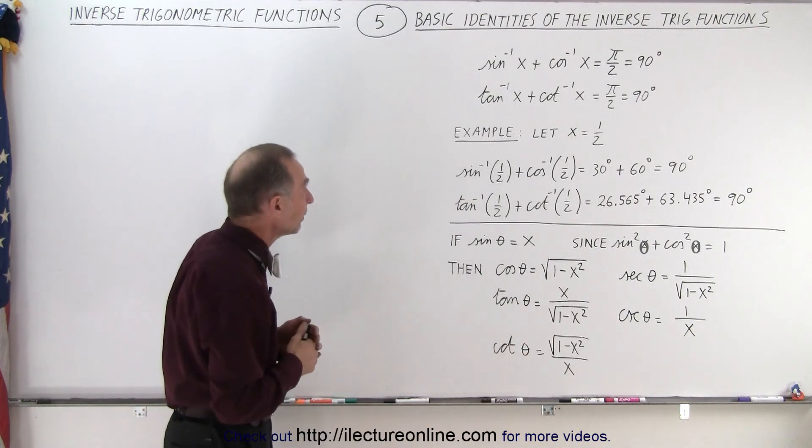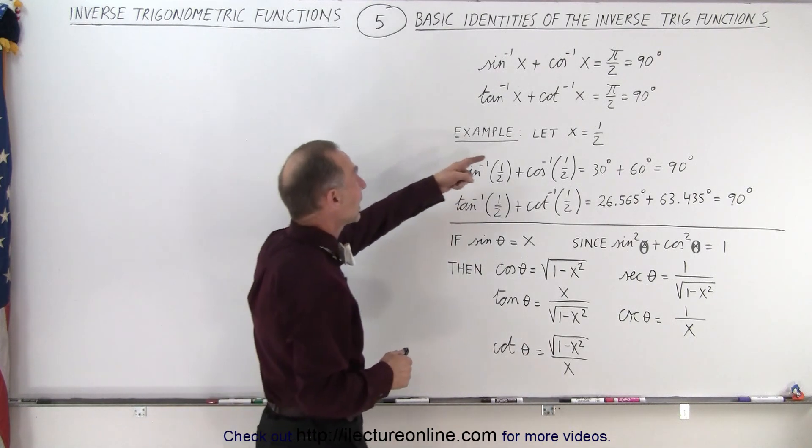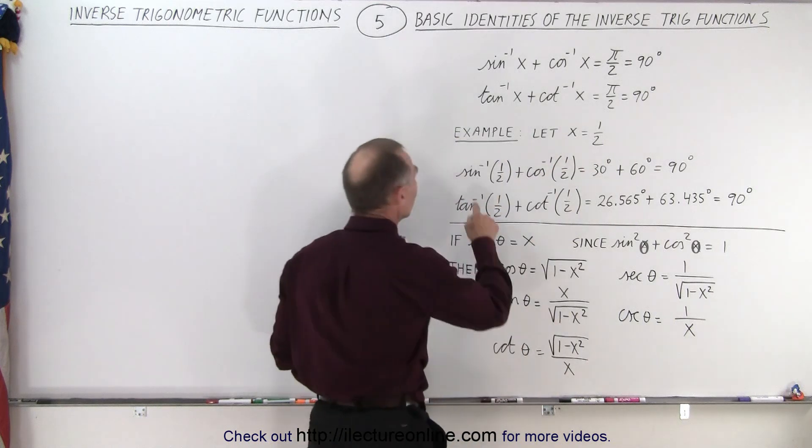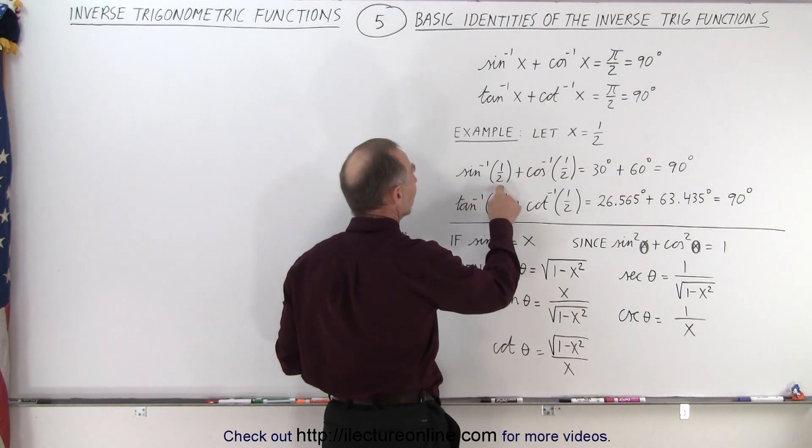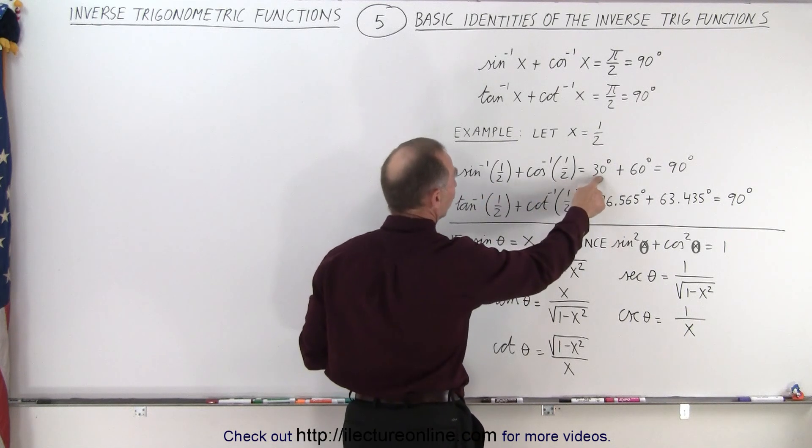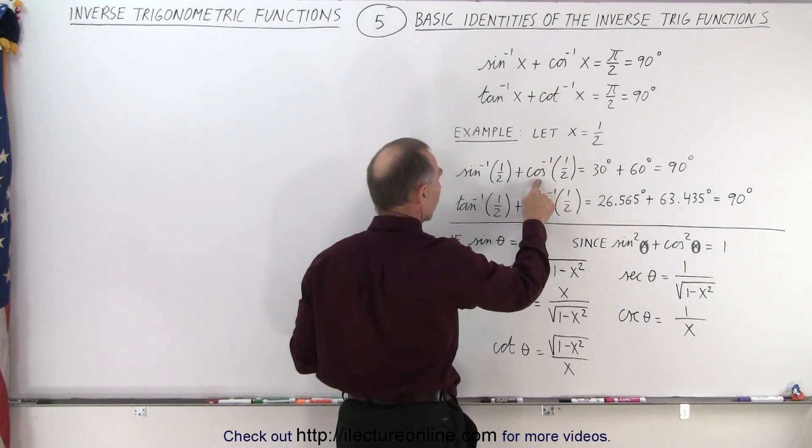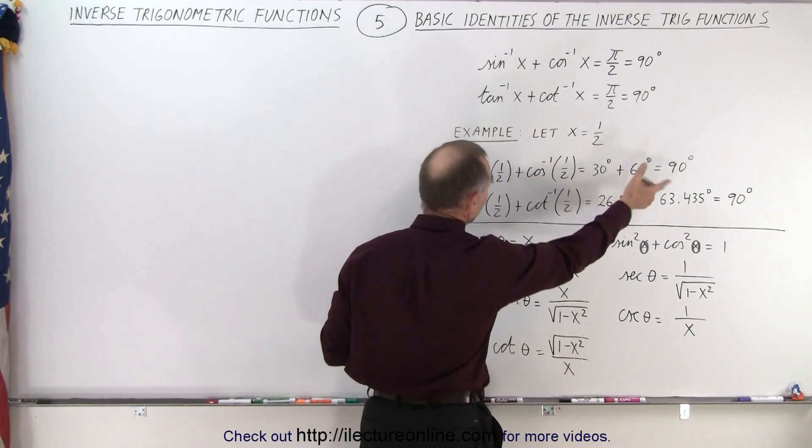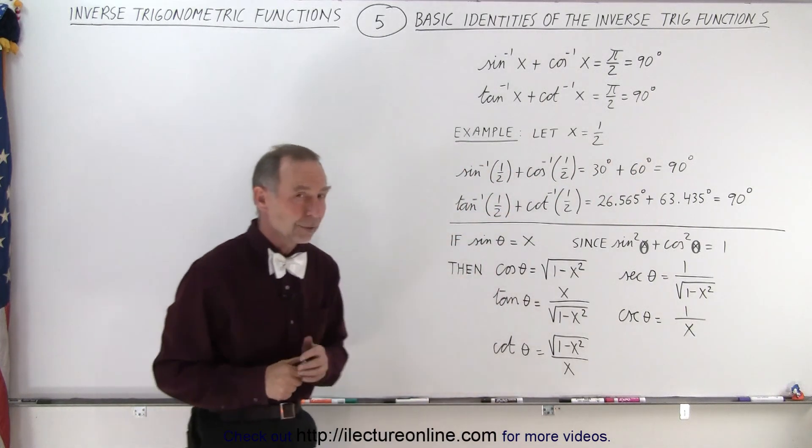To show you an example of that, let's say that x equals 1/2. You take the inverse sine of 1/2 plus the inverse cosine of 1/2. Well, the inverse sine of 1/2 is 30 degrees and the inverse cosine of 1/2 is 60 degrees. When you add them together indeed you get 90 degrees.